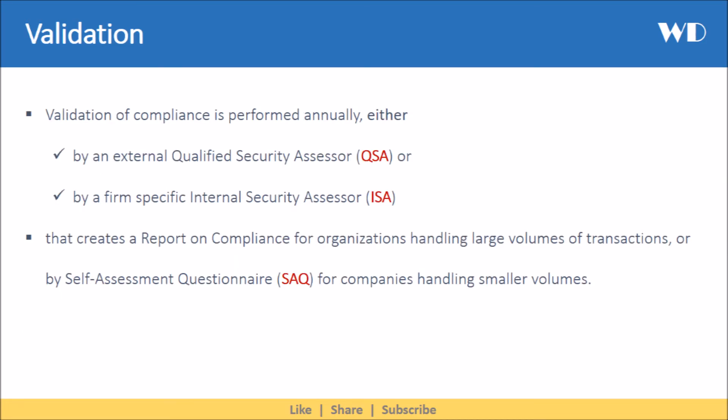The validation of compliance is performed annually, either by an external qualified security assessor, commonly known as QSA, or by a firm-specific internal security assessor, known as ISA, that creates a report on compliance for organizations handling large volumes of transactions, or by self-assessment questionnaire for companies handling smaller volumes.